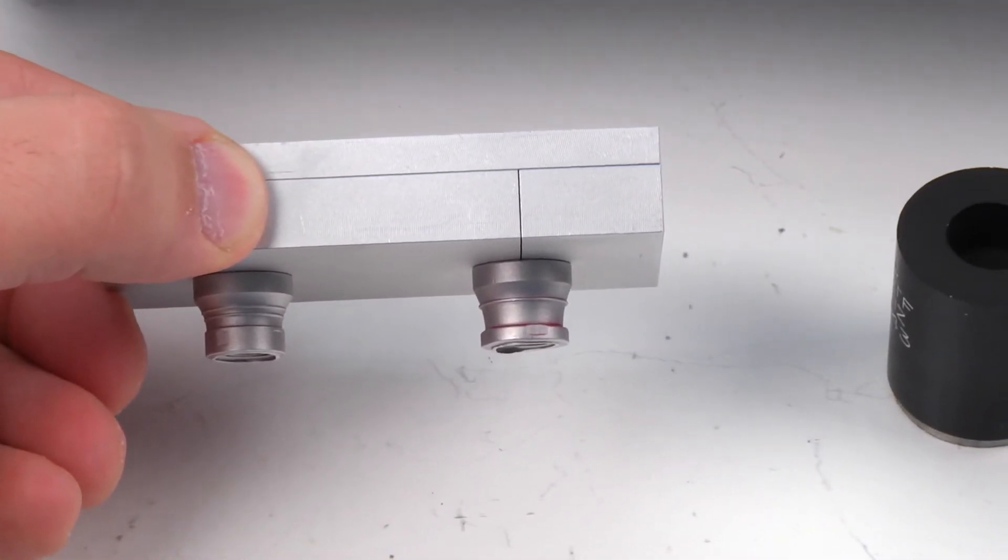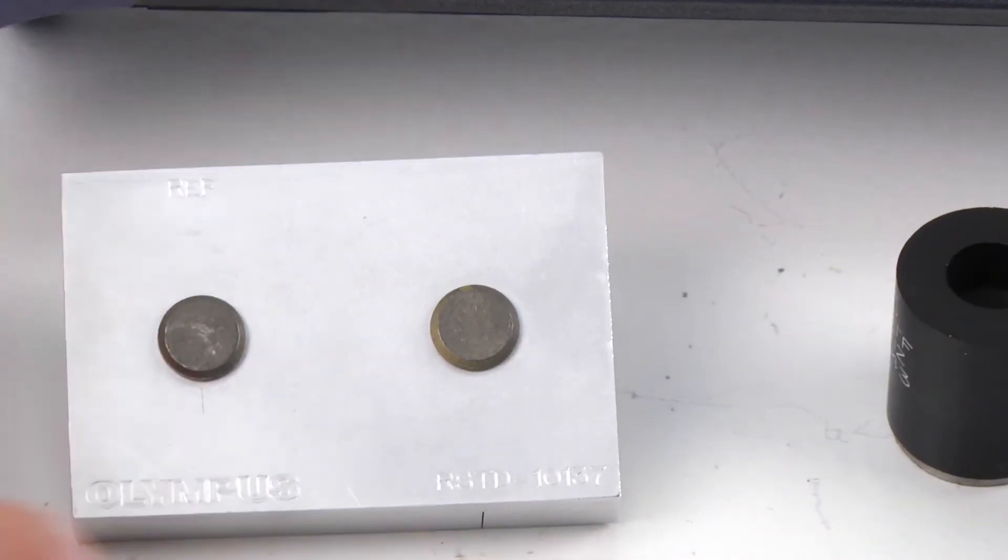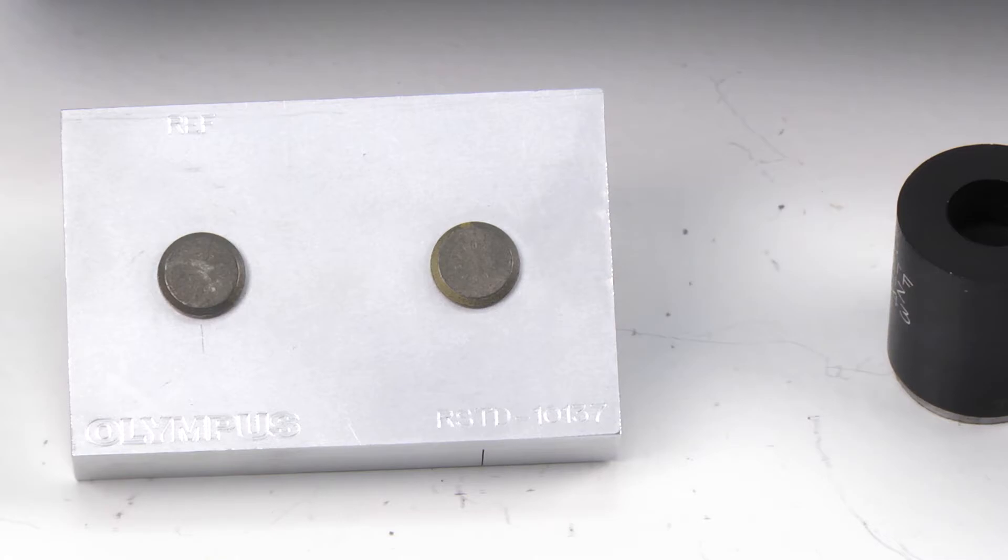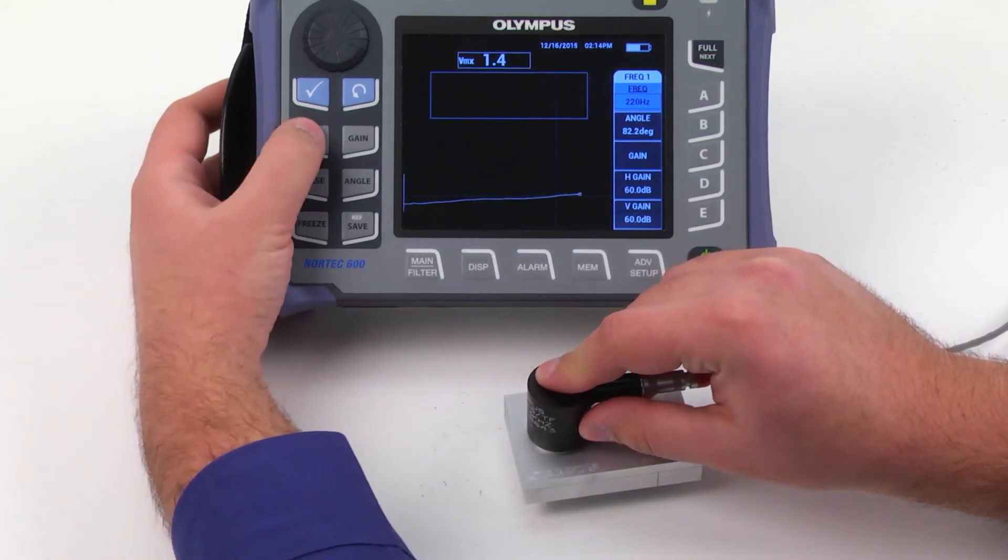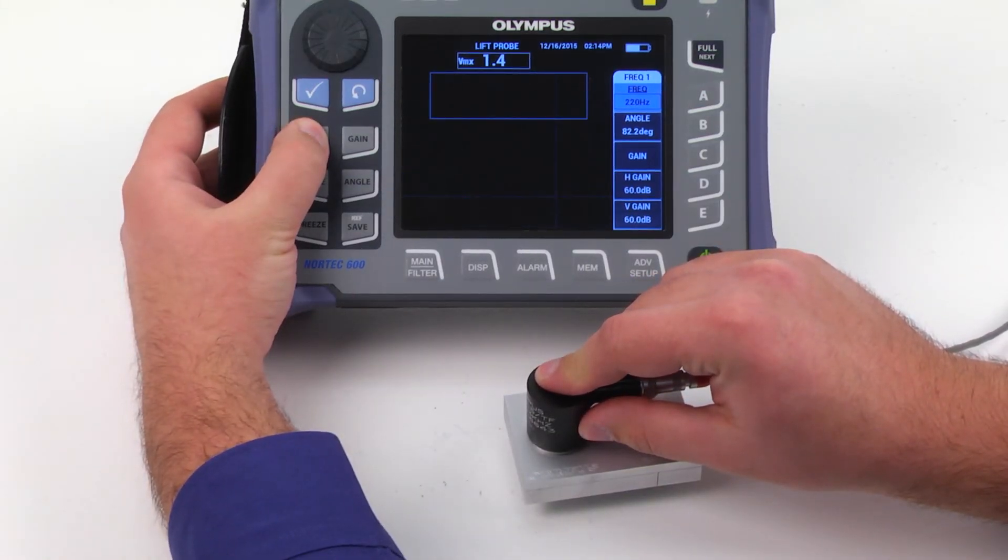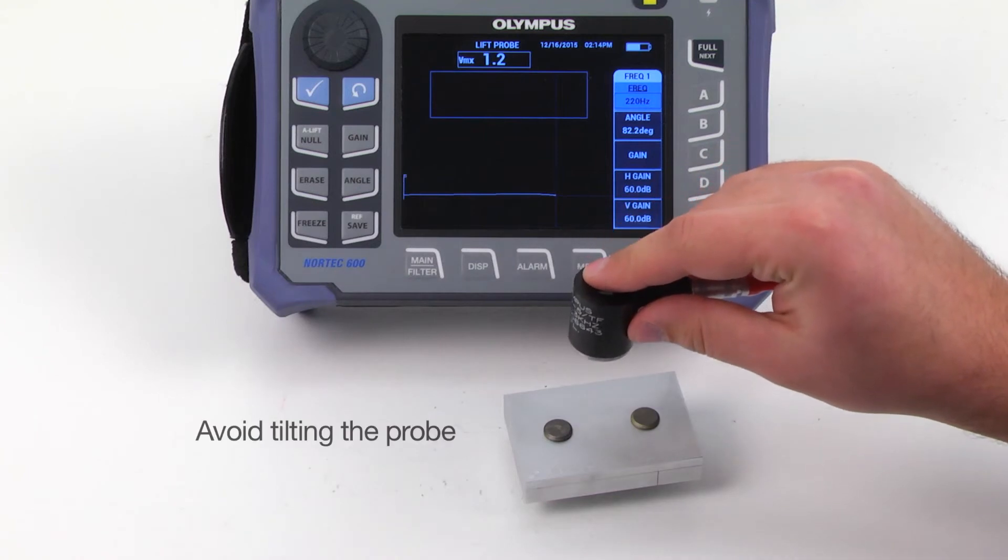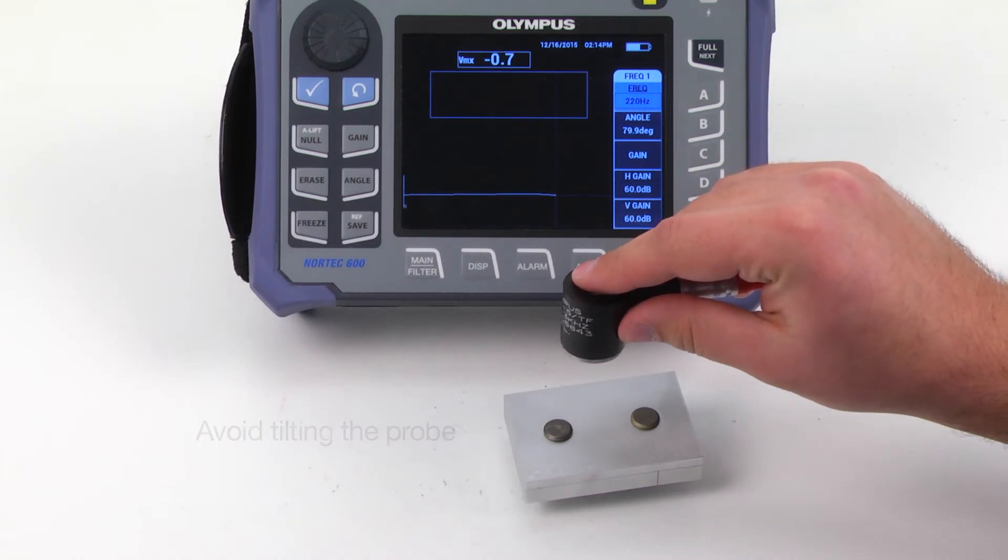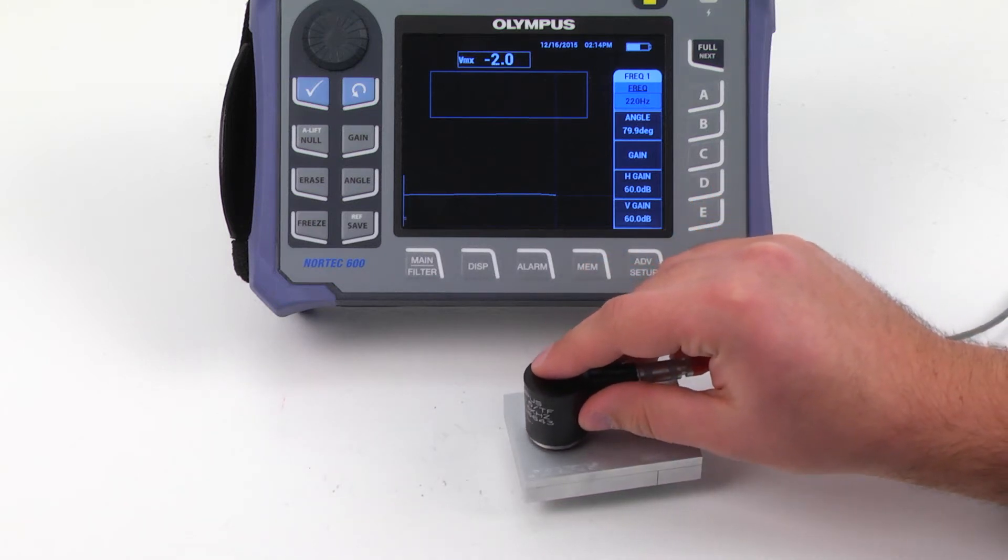Place the calibration standard with the undamaged fastener to the left and the damaged fastener to the right. Place the probe over the good fastener and press and hold the Null key. When the Nortec beeps, lift the probe straight into the air. Avoid tilting the probe. Place the probe over the good fastener and press Null.